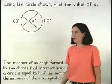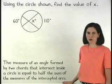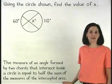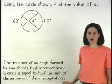Remember that the measure of an angle formed by two chords that intersect inside a circle is equal to half the sum of the measures of the intercepted arcs.